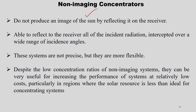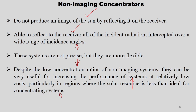Non-imaging concentrators do not produce an image of the sun but can reflect all incident radiation intercepted over a wide range of incidence angles. These systems are not precise but are more flexible. Despite low concentration ratios, they can be very useful for increasing system performance at relatively low cost, particularly in regions where the solar resource is less than ideal for proper concentrating systems, since they collect both beam and diffusive radiation.